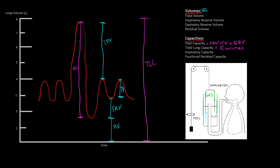The inspiratory capacity is the amount of gas we can inspire from rest, labeled IC. Using our volumes, inspiratory capacity is the summation of tidal volume plus inspiratory reserve volume. Our last capacity, functional residual capacity, is the volume of gas in the lung after a normal expiration. After a normal expiration is completed, the gas remaining in the lungs is our FRC or functional residual capacity, and using our volumes that's the summation of the expiratory reserve volume and the residual volume.